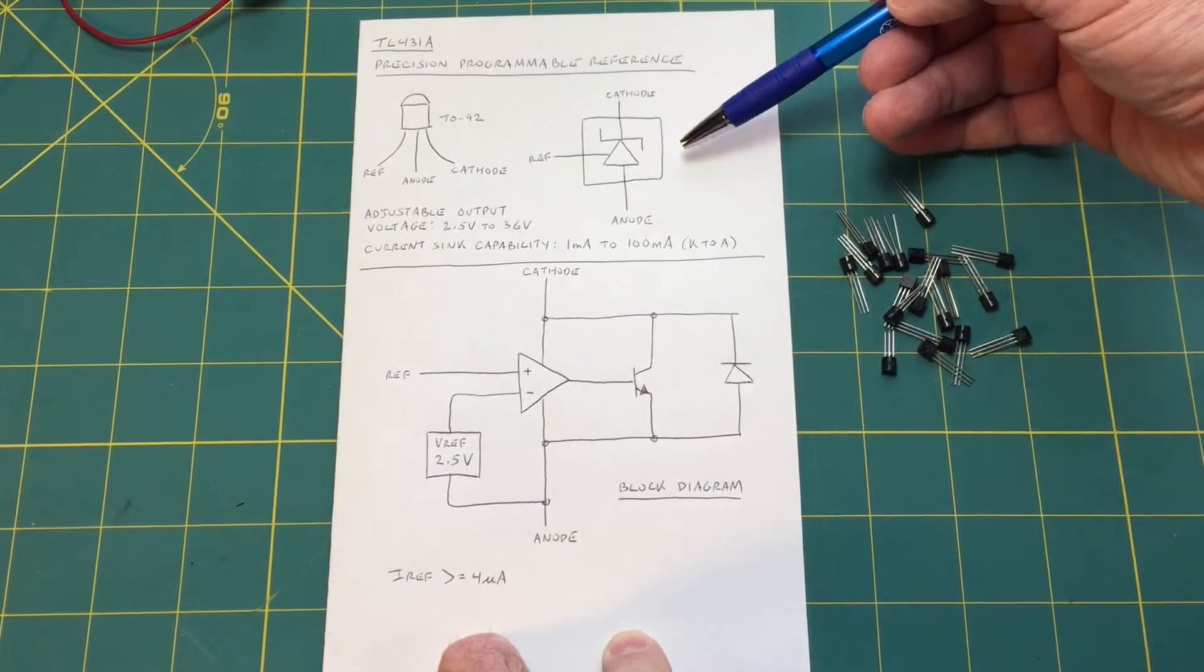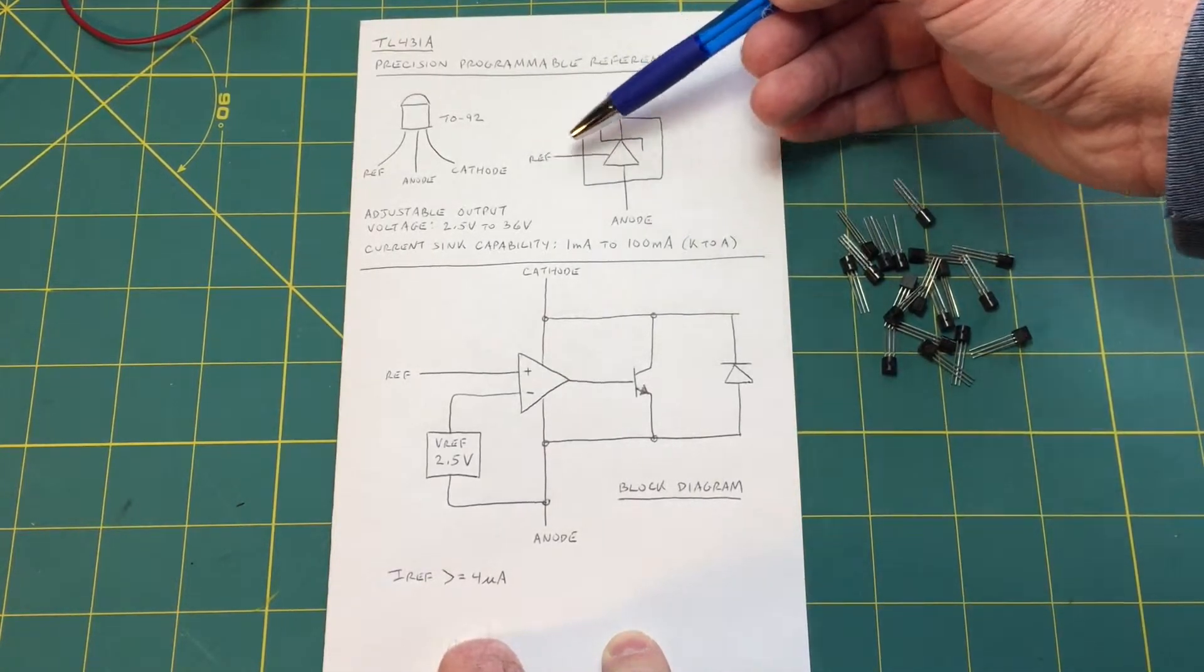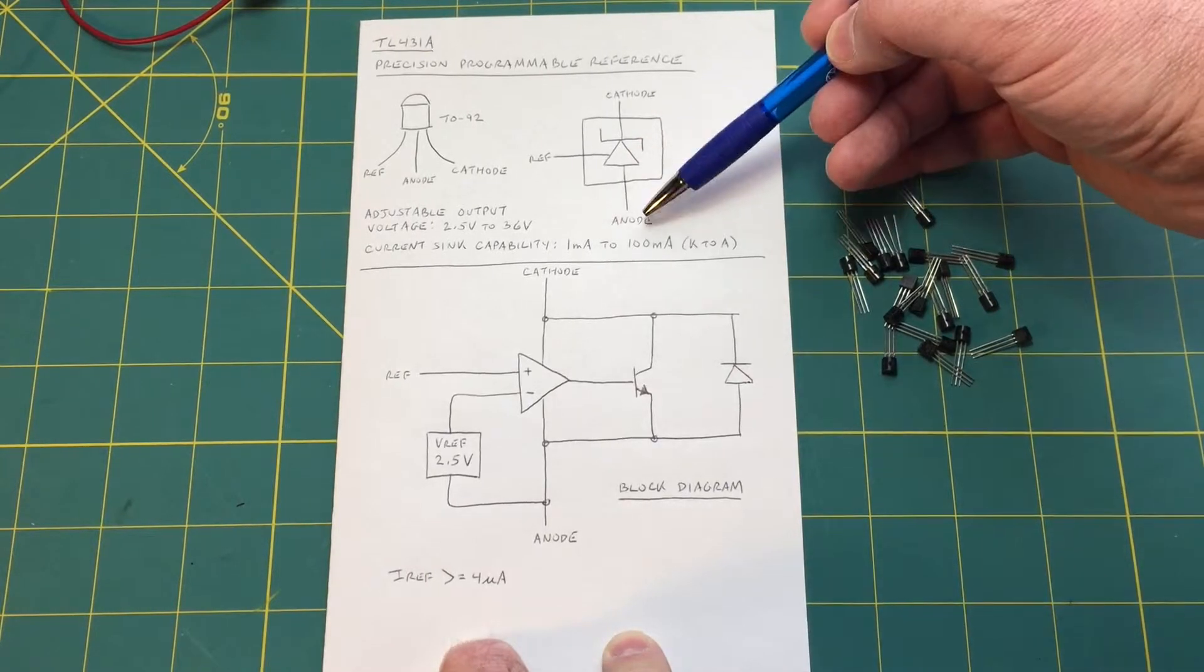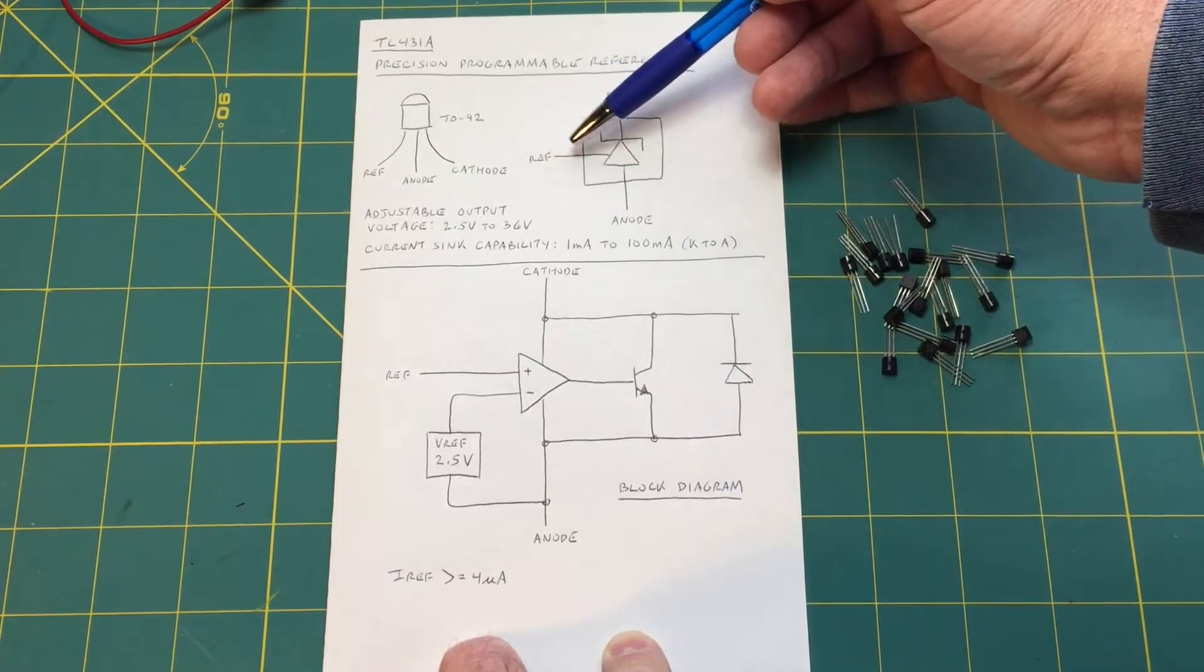This is the schematic symbol and you can see it looks very much like a Zener diode with an extra lead on it. There's an anode and a cathode like a Zener has and there's this ref pin.